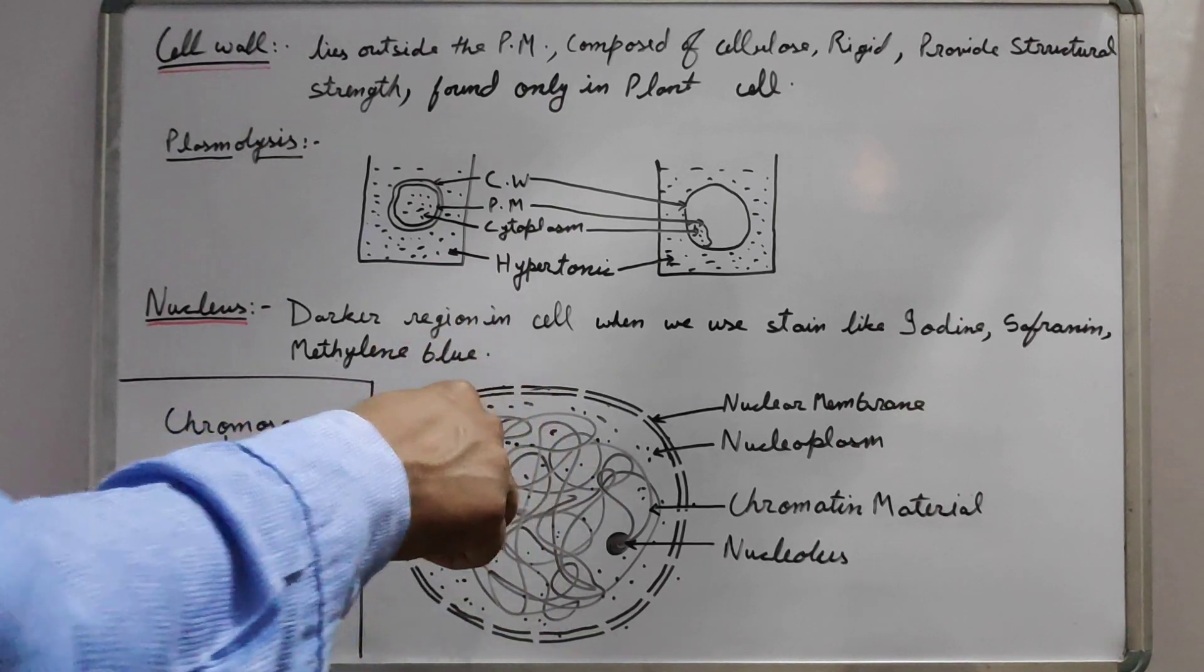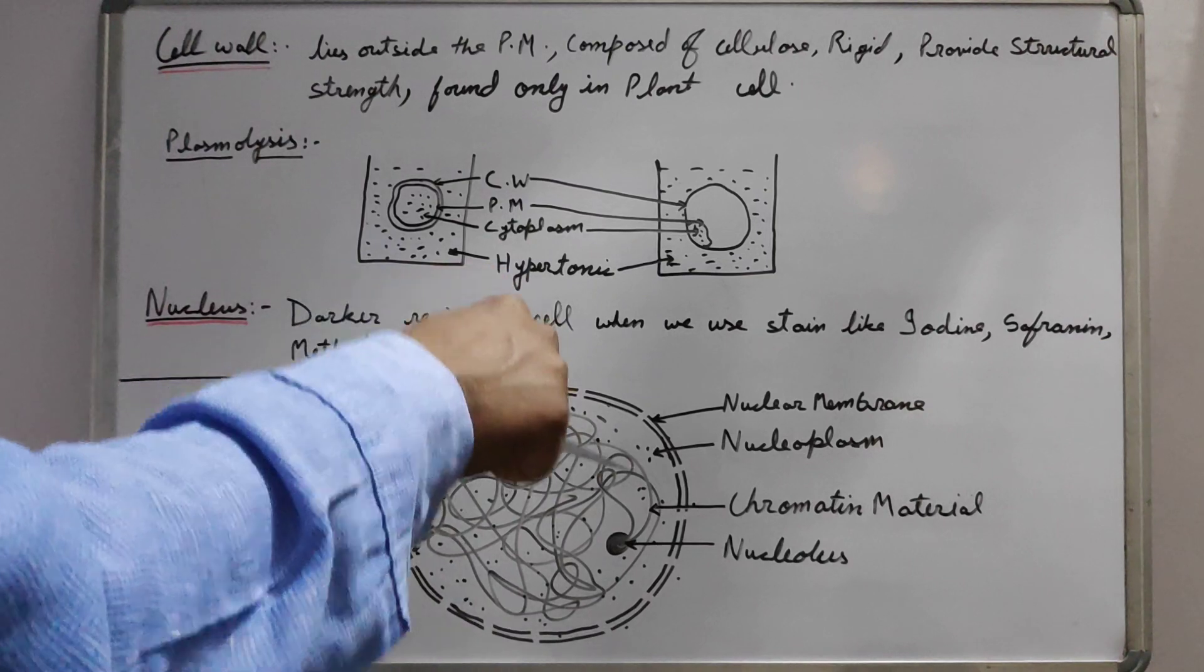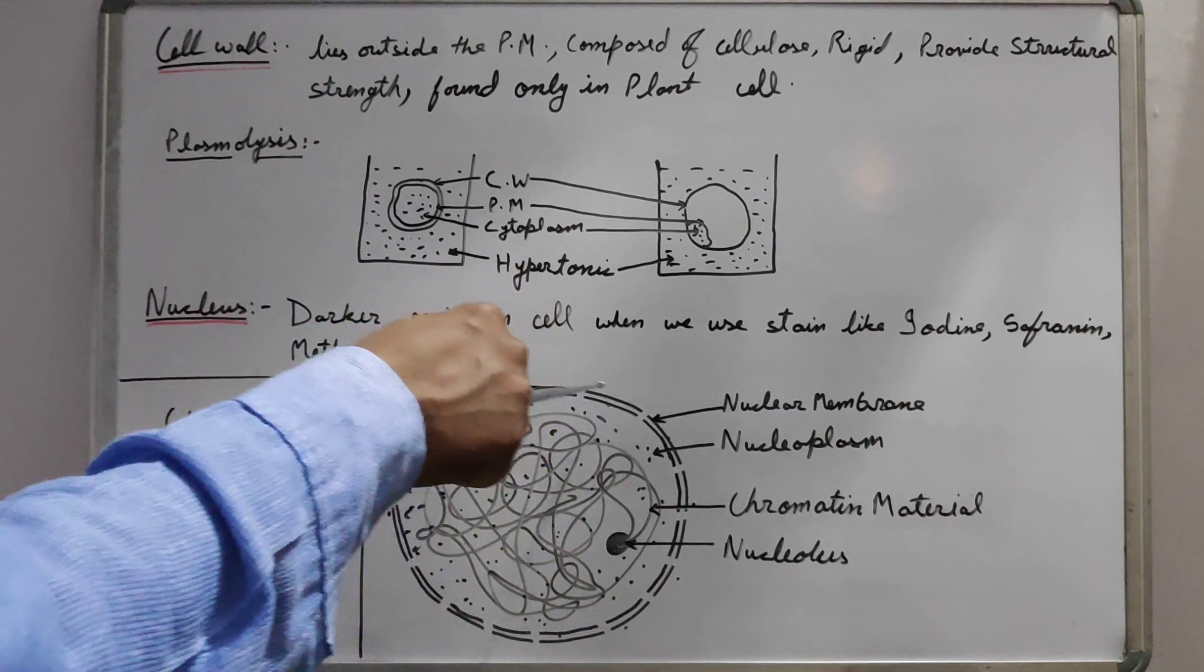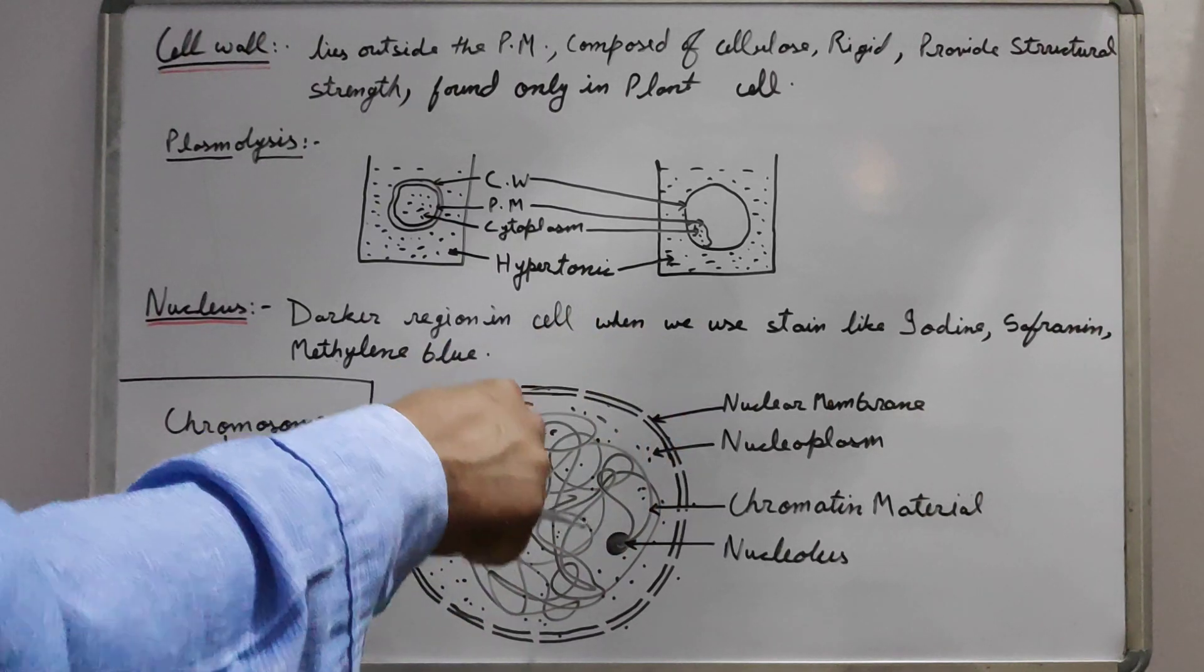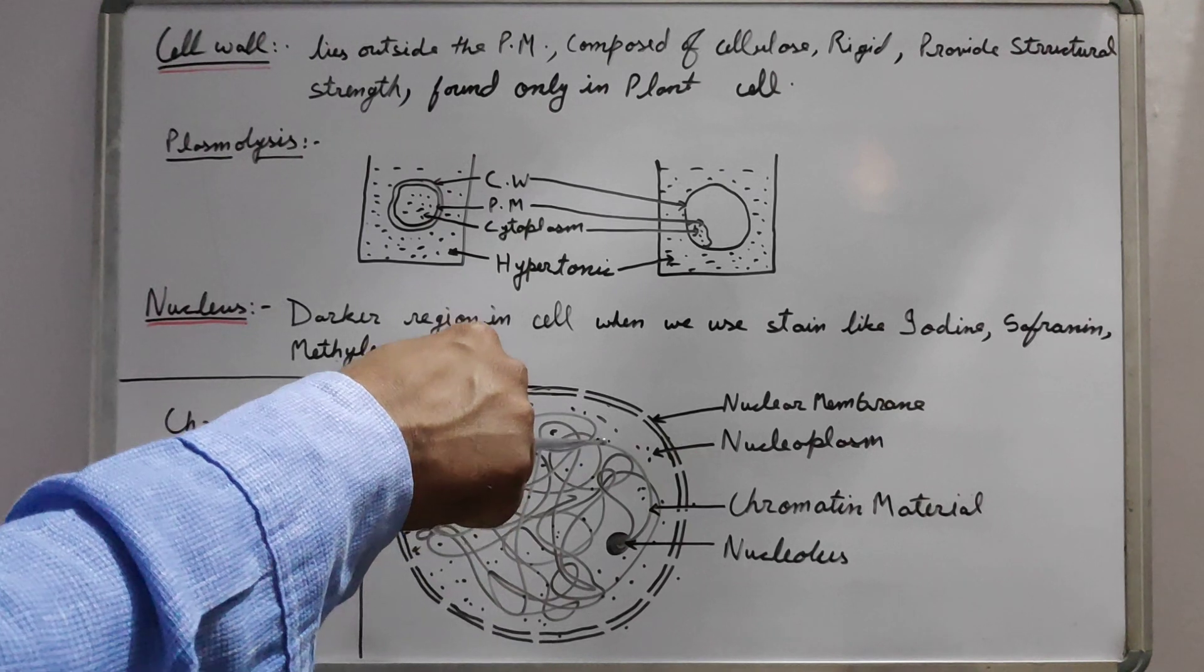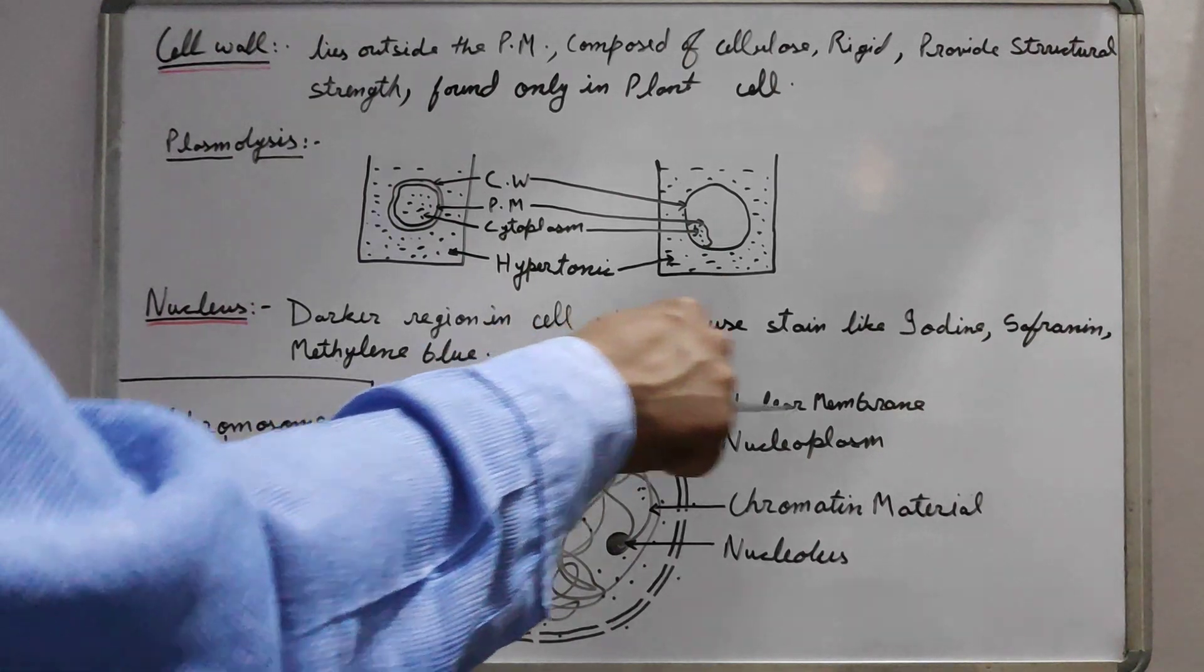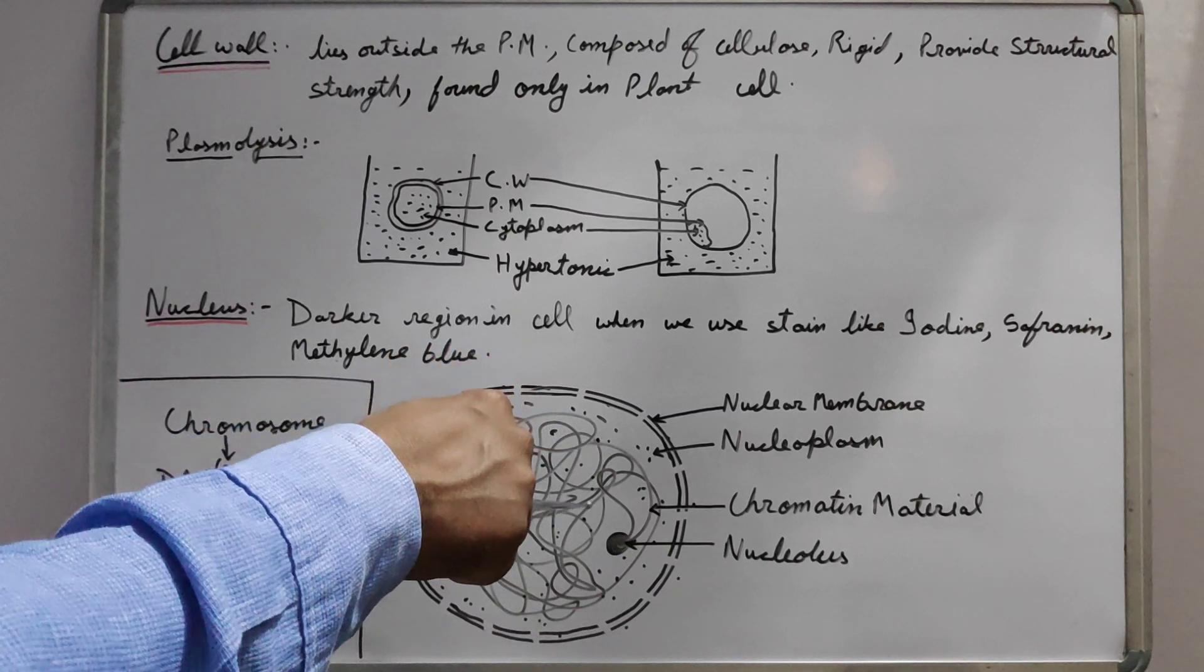But if the genetic material is not covered by the nuclear membrane and is undefined in the cell, then we call it a prokaryotic cell. The genetic material that is not covered by the nuclear membrane, when genetic material is free, then this type of structure in the cell we call nucleoid. That means the genetic material is not covered by the nuclear membrane and that material is known as the nucleoid.